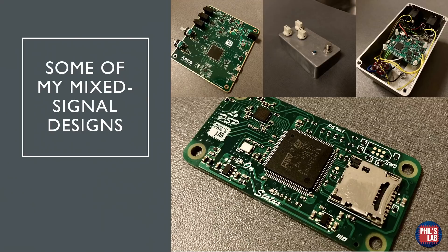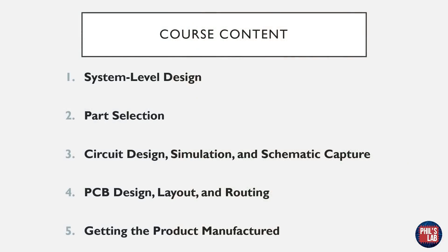So a lot of content to come. Overall, we can split the course content into five parts. First, system-level design: starting from a basic product brief, figuring out system requirements, diving deeper into specifications, sizing power supplies, and identifying which sections we might need. Once we have that in place, we move to part selection, where we really hone in and choose specific microcontrollers, specific ADCs, specific op-amps, and so forth.